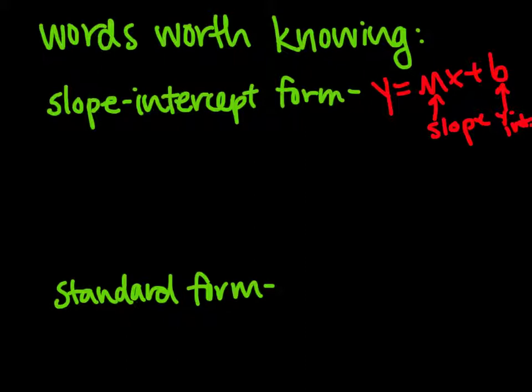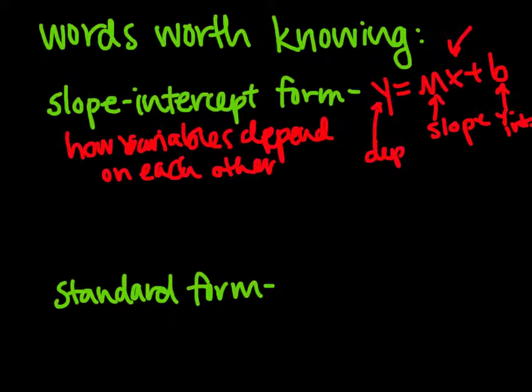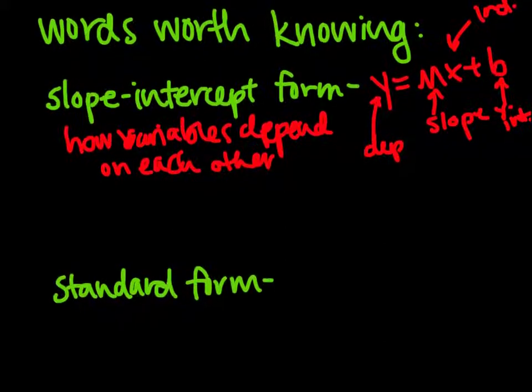As well as slope-intercept form, we can see directly how variables depend on each other. So we can see how y is dependent on x. We have an independent versus a dependent variable. Anything that we put in for x we directly get out of y. So that is one form of an equation that we're going to be looking at.